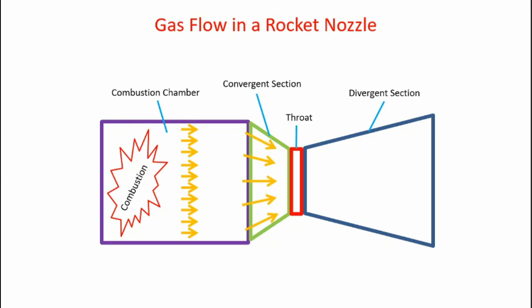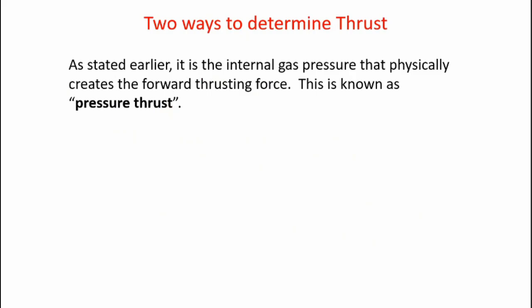Now when that occurs, when we decrease the area in the convergent section, the flow velocity increases. It's like putting your thumb over the end of a hose and getting the water to squirt out faster. Now the goal is to get Mach 1 at the throat. Now when that occurs, we get supersonic flow in the divergent section. As we move towards an area of lower pressure outside the nozzle, the flow velocity actually increases. That's maximizing the exit velocity of the gases leaving the rocket motor.